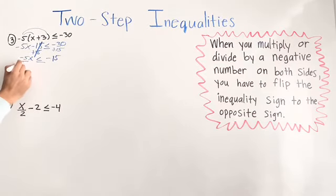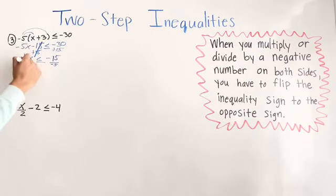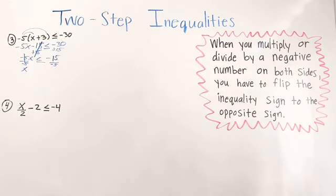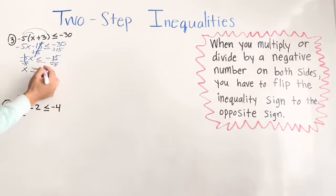Now divide by negative 5 because our variable has to be positive. Divide by negative 5 on both sides — it cancels, leaving x. But remember, when you multiply or divide by a negative number on both sides, you have to flip the inequality sign. So less than or equal to flips to greater than or equal to. And negative 15 divided by negative 5 gives you positive 3.